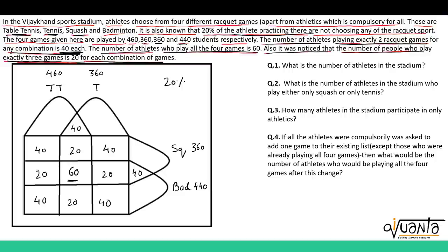I hope everything is clear to you till this point. We are only left with 4 regions that haven't been provided any value. To find them, we were given the number of athletes playing individual games: 460, 360, 360 and 440. In every set only one region is unknown, so we subtract the sum of all known regions from the total. For table tennis: summing all known regions gives 240, so the missing area is 460 minus 240 equals 220.